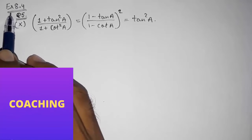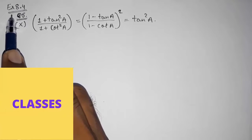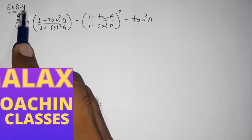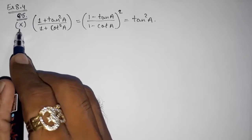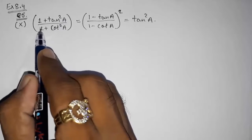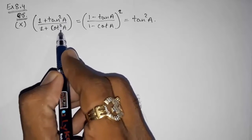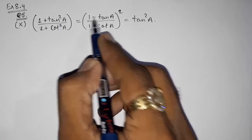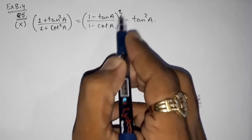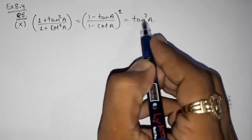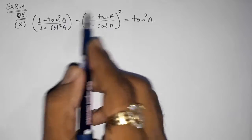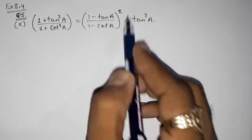Hello friends, today we are going to solve CBSE Class 10 Maths Exercise 8.4, Question 5, Sub-question 10: (1 + tan²a) / (1 + cot²a) equals (1 - tan a)/(1 - cot a) whole square equals tan²a. We have to prove all these three terms are equal.